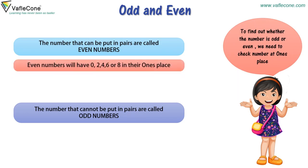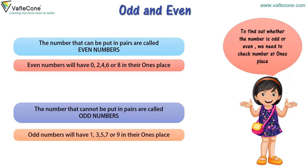Even numbers will have 0, 2, 4, 6 or 8 in their one's place. Odd numbers will have 1, 3, 5, 7 or 9 in their one's place.